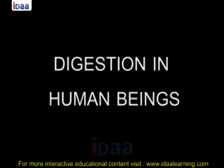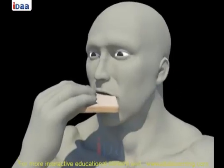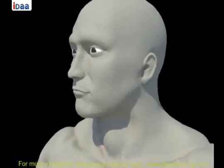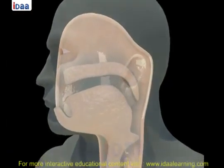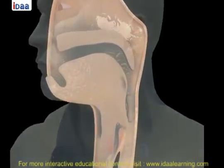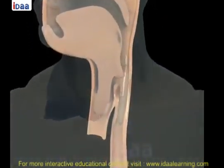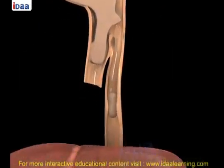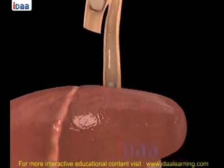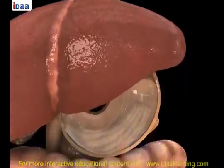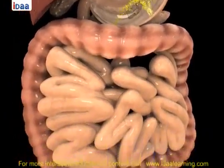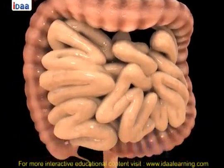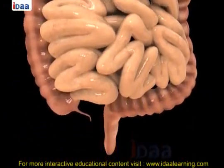Digestion in Human Beings. Human beings take food through the mouth and digest it in specific organs. The undigested food is defecated. The food we take passes through a specific canal which begins with the buccal cavity and ends at the anus. This canal is called the alimentary canal or the digestive tract.